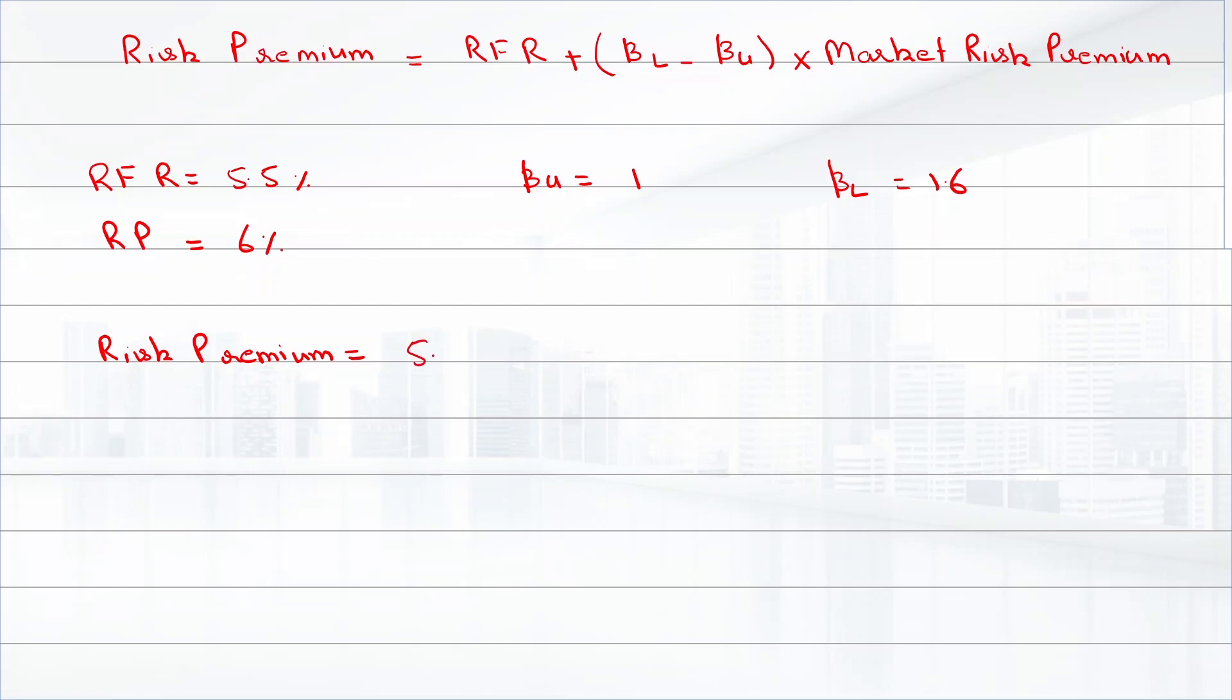5.5% plus 1.6 minus 1 multiplied by 0.6 equals 0.055 plus 0.6 multiplied by 0.6, which equals 0.055 plus 0.036, that equals 9.1%.